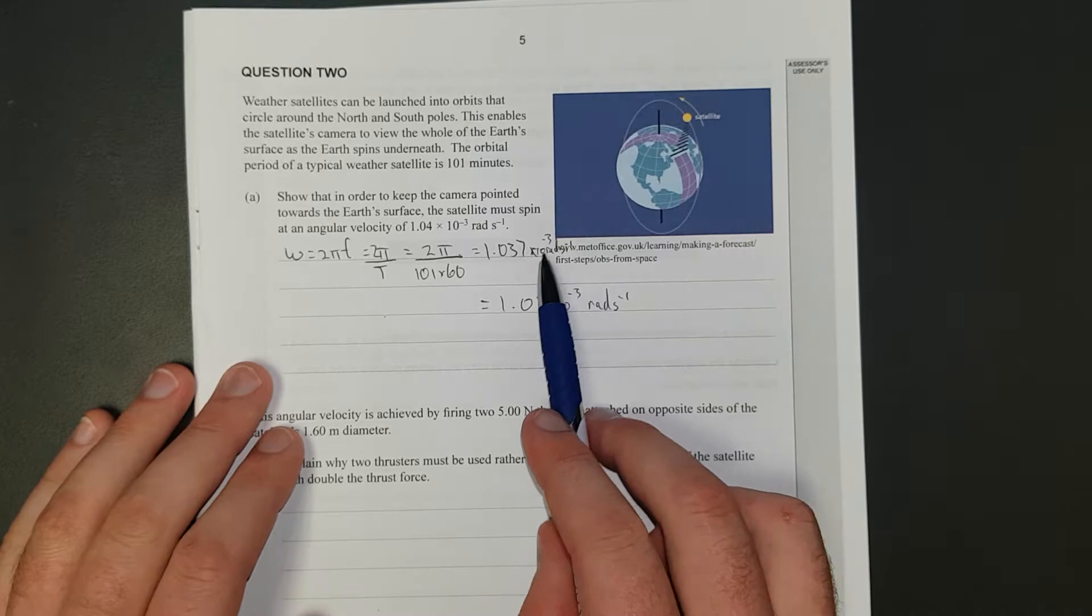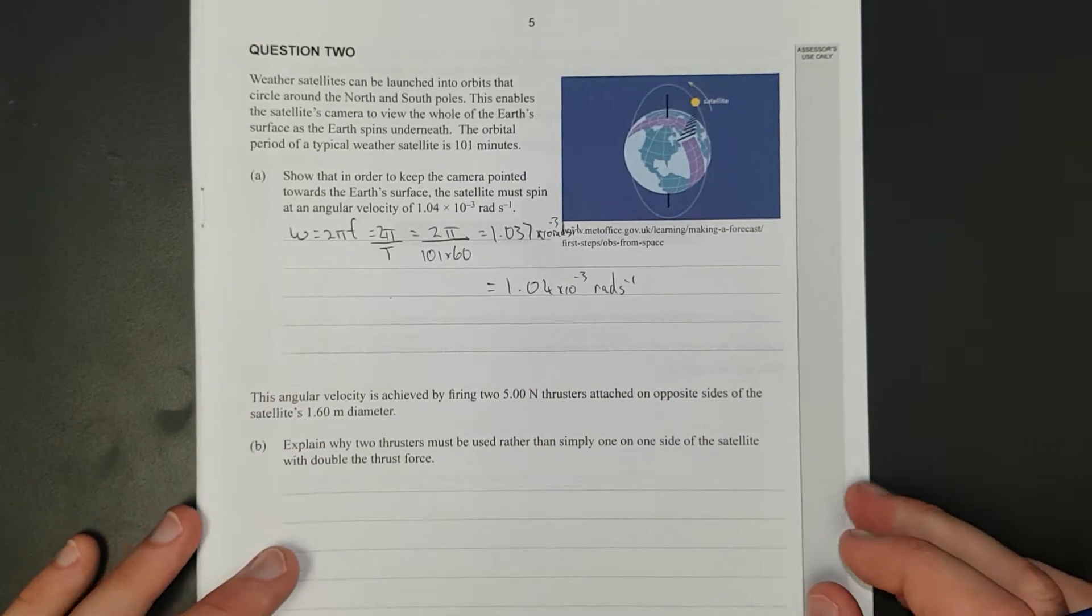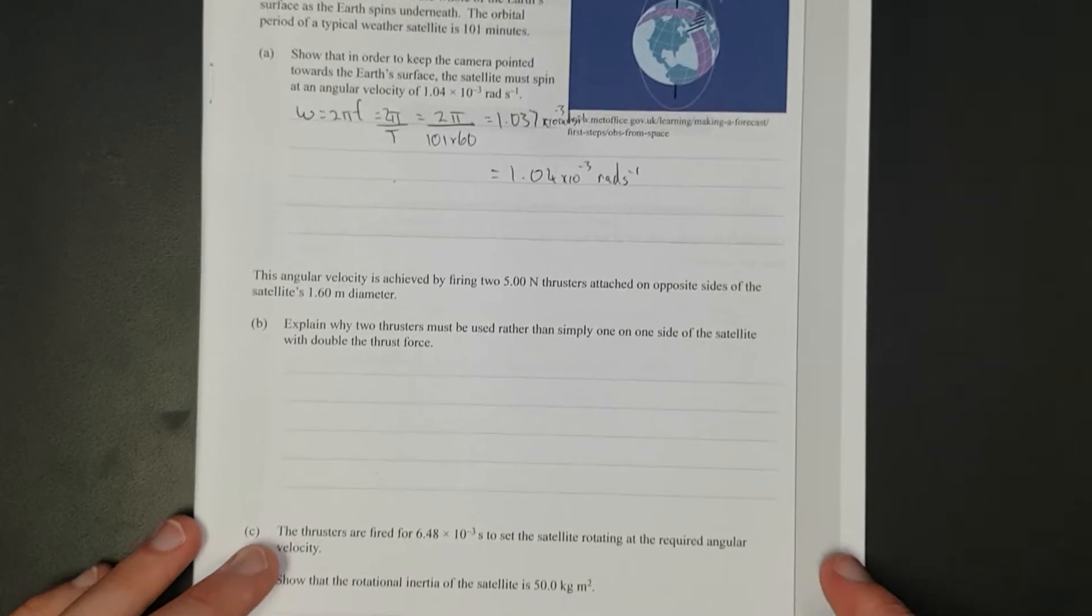You can round that up to 1.04 times 10 to the negative 3 radians per second. For these show questions, you need to have the formula, the correct working, and then the correct answer. Obviously, an examiner will be able to see that and give you a mark, and that's pretty obvious right there.